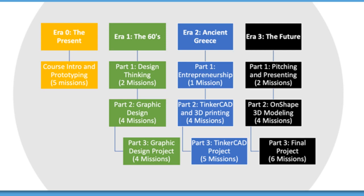Each VIL course takes about 10 weeks to complete, assuming five 50-minute class periods per week. The courses are broken down into four units, or in this time travel theme, eras. Each era consists of multiple parts, and each part consists of multiple lessons or missions. A mission takes about one class period to complete.